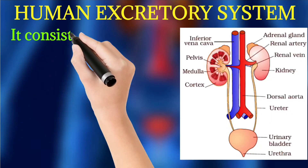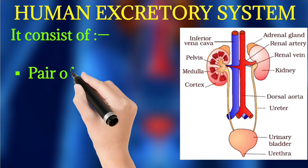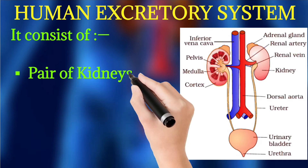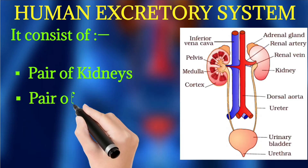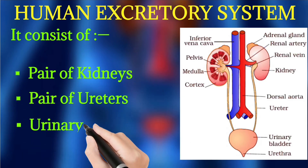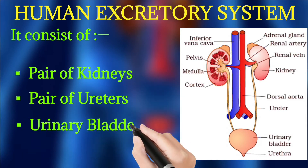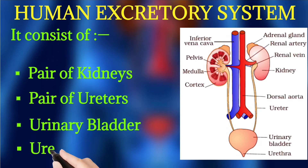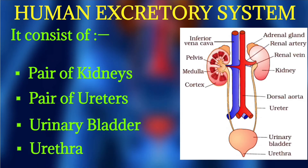The human excretory system consists of a pair of kidneys, a pair of ureters, the urinary bladder, and the urethra. You can see the diagram of the human excretory system, also known as the human urinary system.